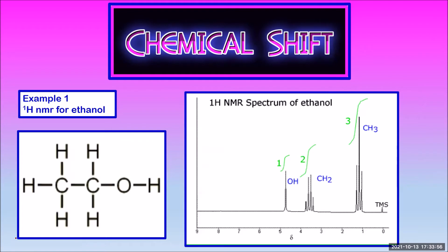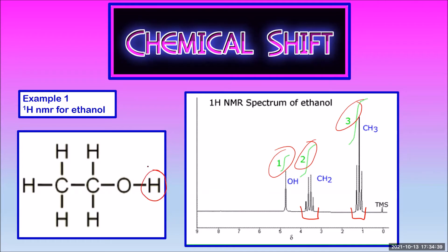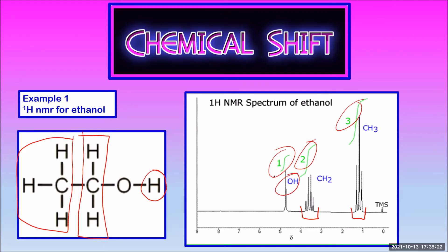Here's the NMR spectrum for ethanol. A proton NMR looks really different to a carbon-13 NMR because of the peaks being split into sub-peaks — we'll talk about that later. There are three hydrogen environments. The hydrogen in the hydroxyl group is bonded to an oxygen, so it will have the most de-shielding and be the most downfield. The two hydrogens in the CH2 are bonded to a carbon that's bonded to a carbon and an oxygen — fairly de-shielded, but not as much as the hydroxyl hydrogen. The last three hydrogens in the CH3 are bonded to a carbon that's bonded to only another carbon, so they're still pretty shielded and make a peak upfield.